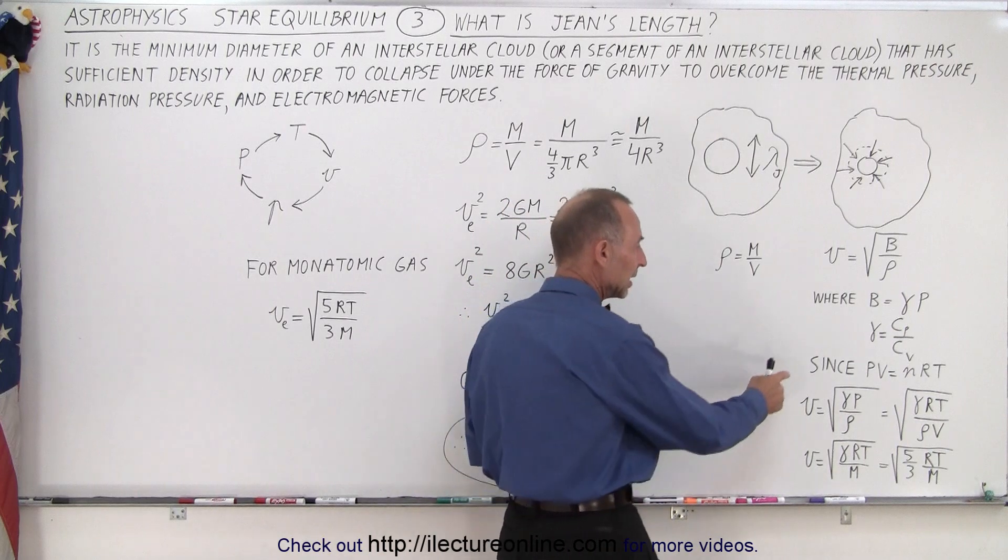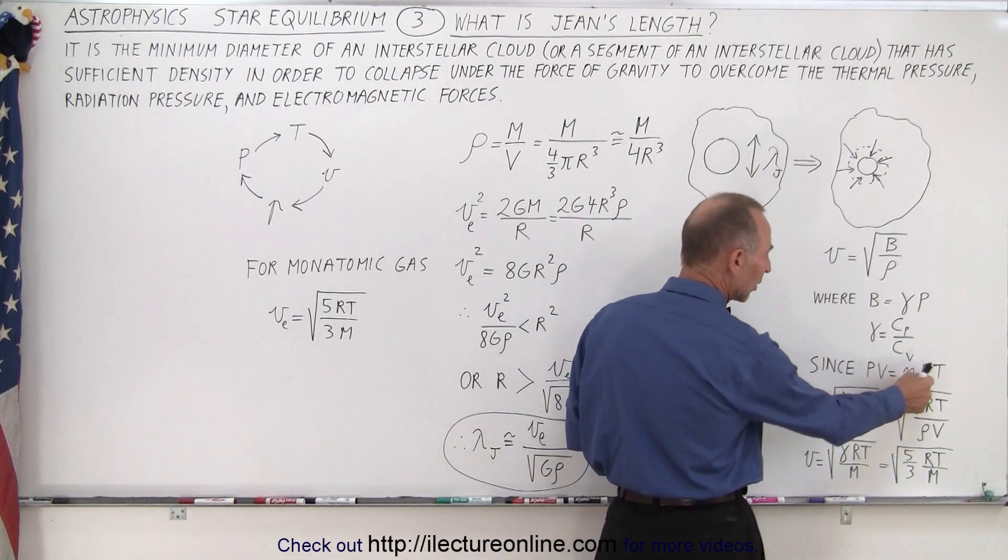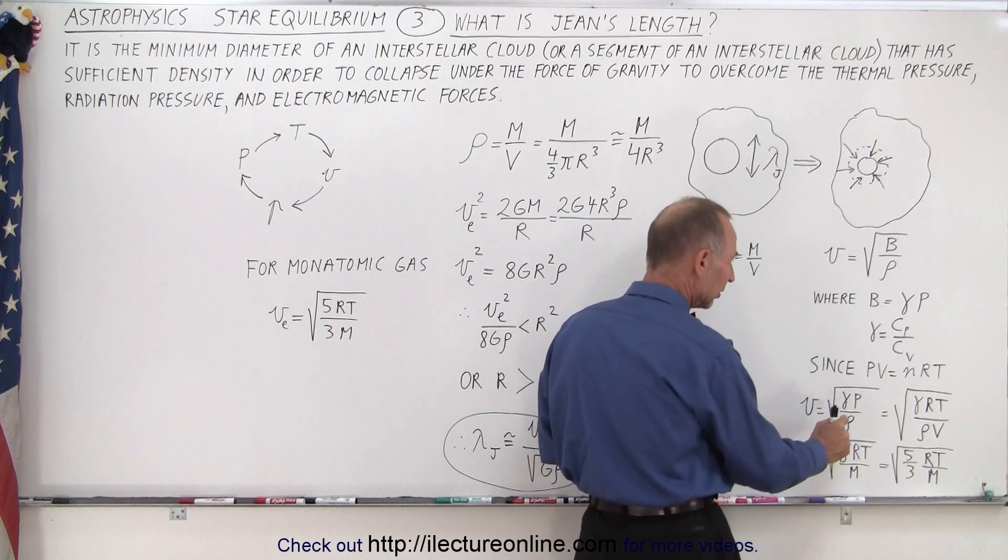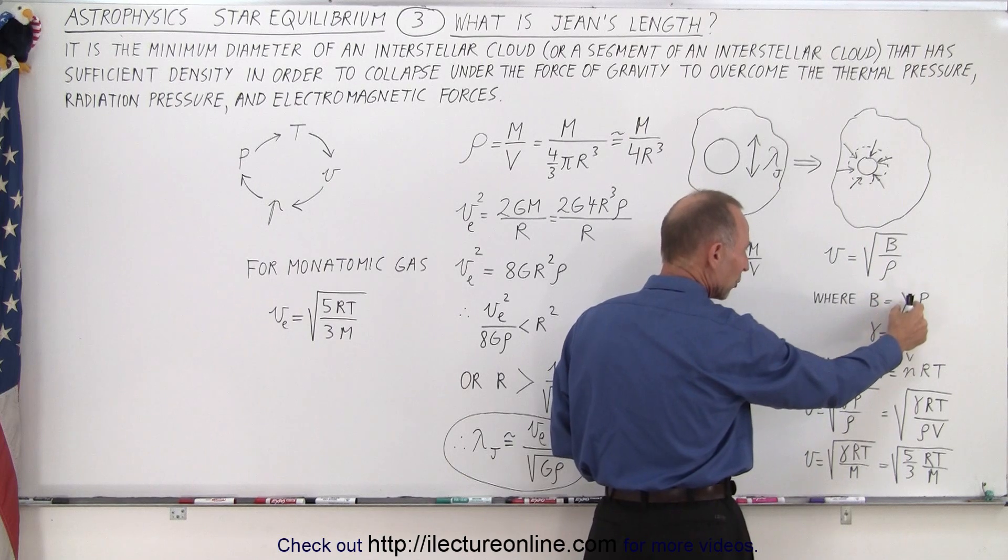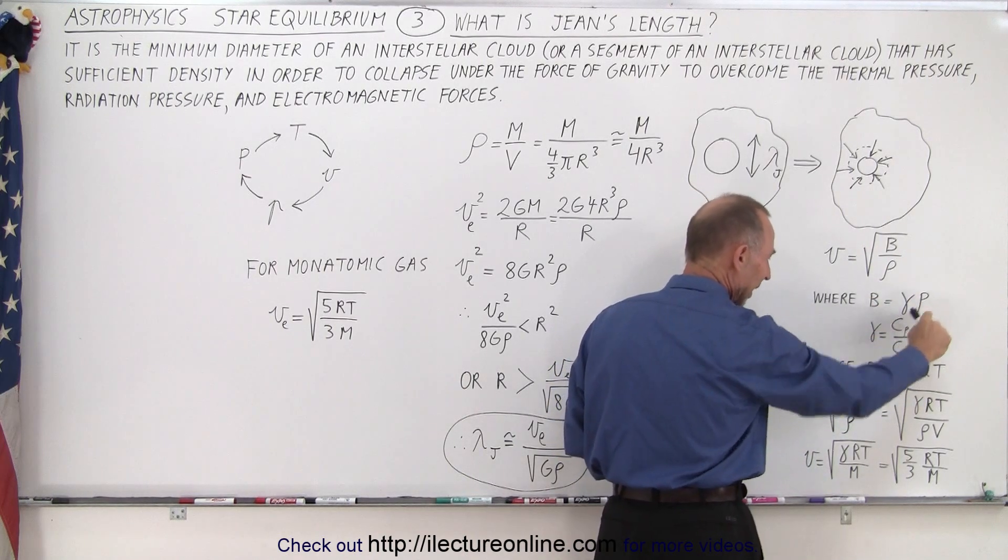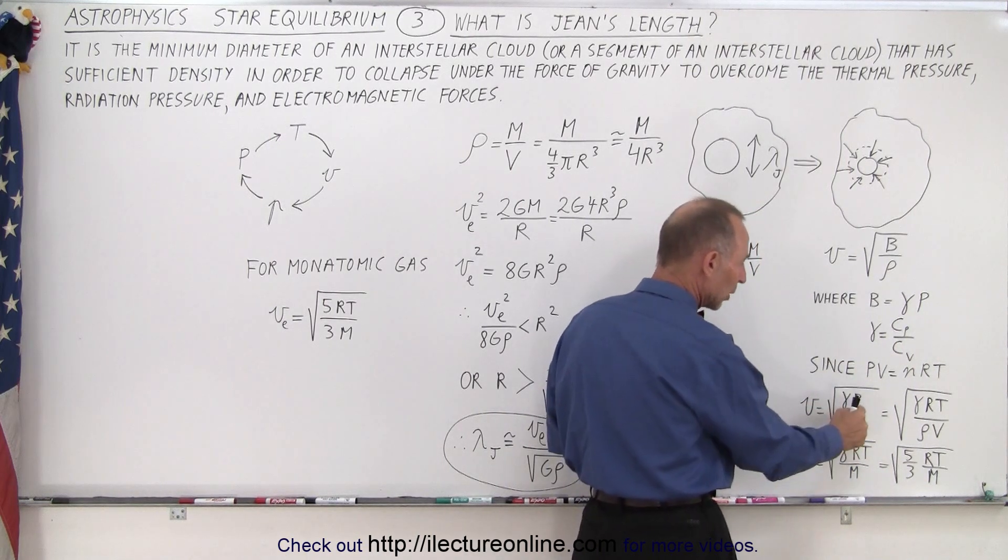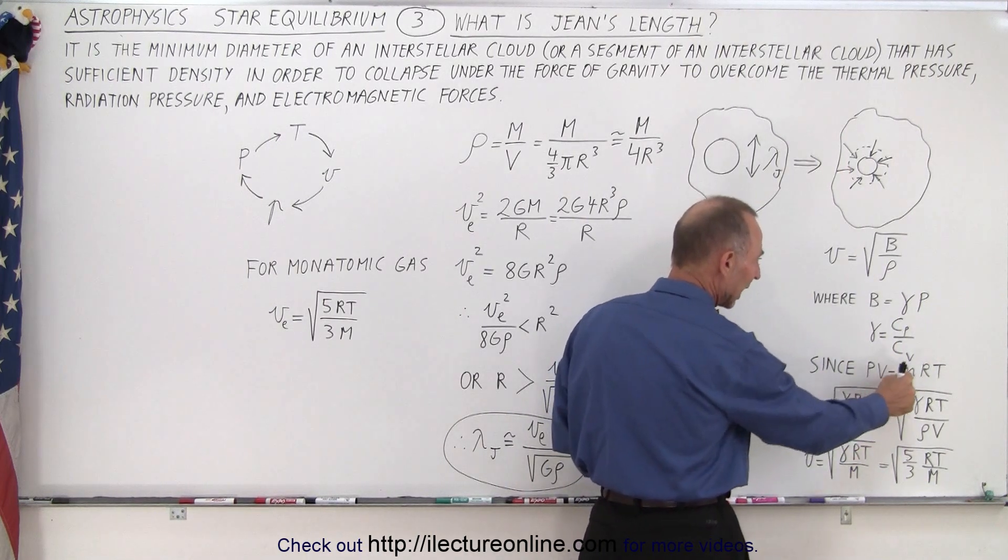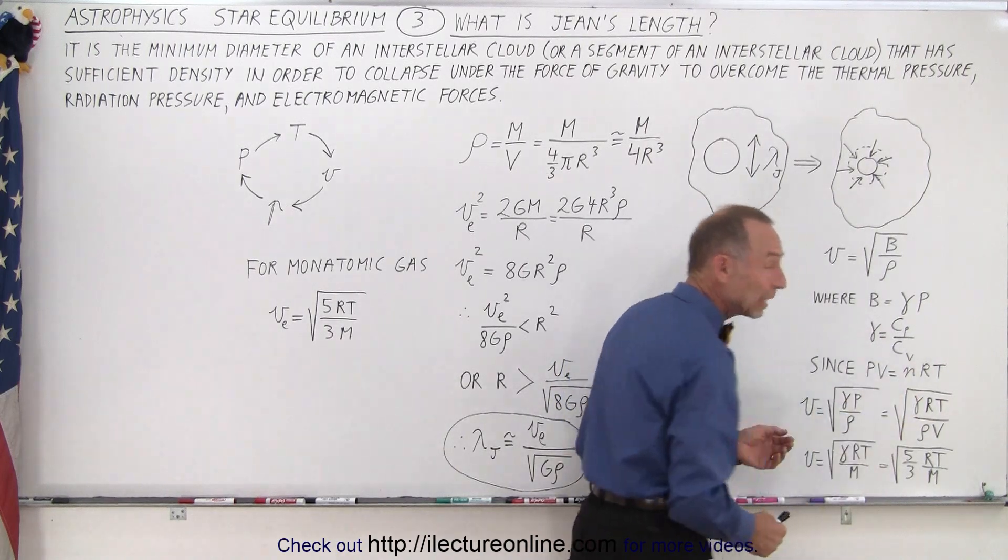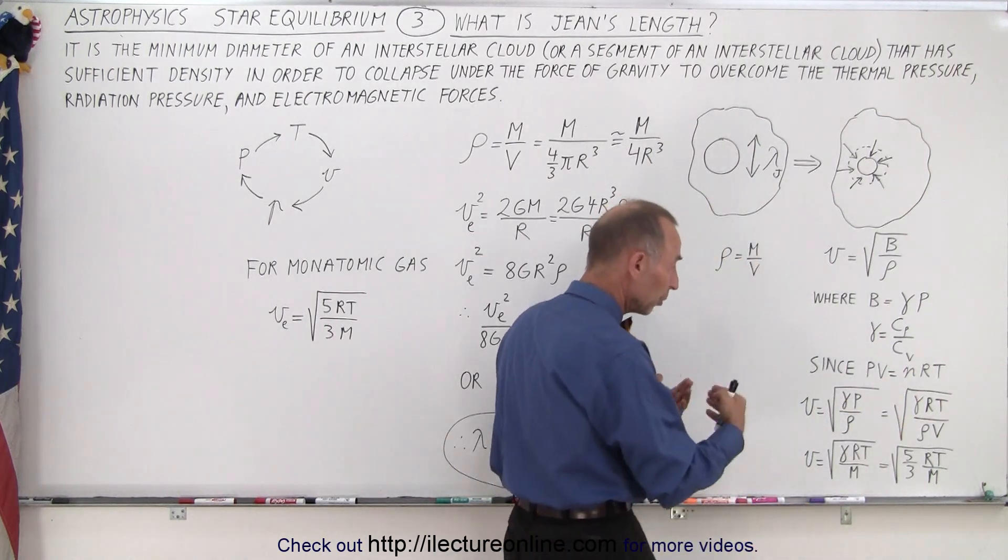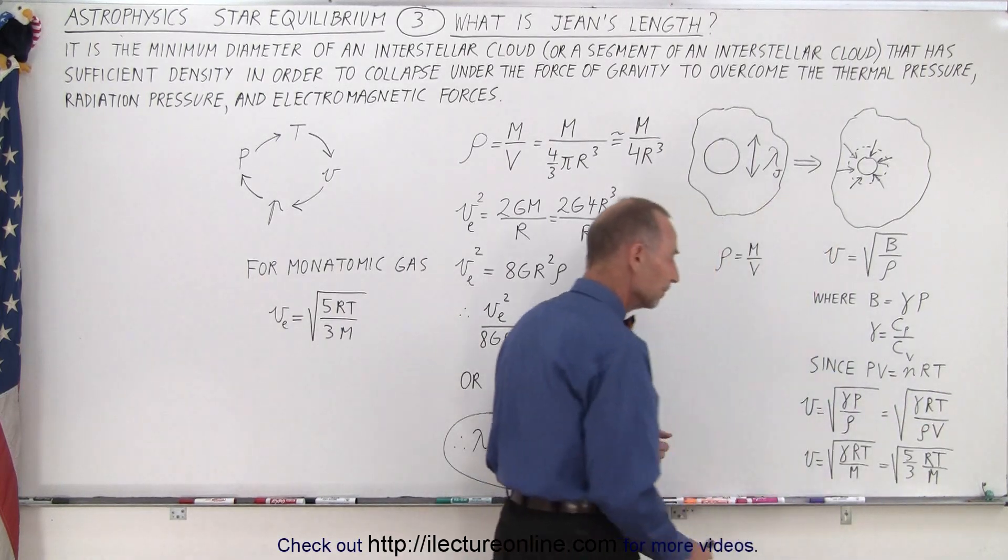And since we know from the ideal gas equation that PV equals nRT, we can then replace the bulk modulus by the ratio of the specific heat times the pressure divided by the density. And then notice we can use p equals nRT divided by the volume, and if we let n equals 1 for 1 mole, that's per mole, we can then say that it's gamma RT over density times the volume.